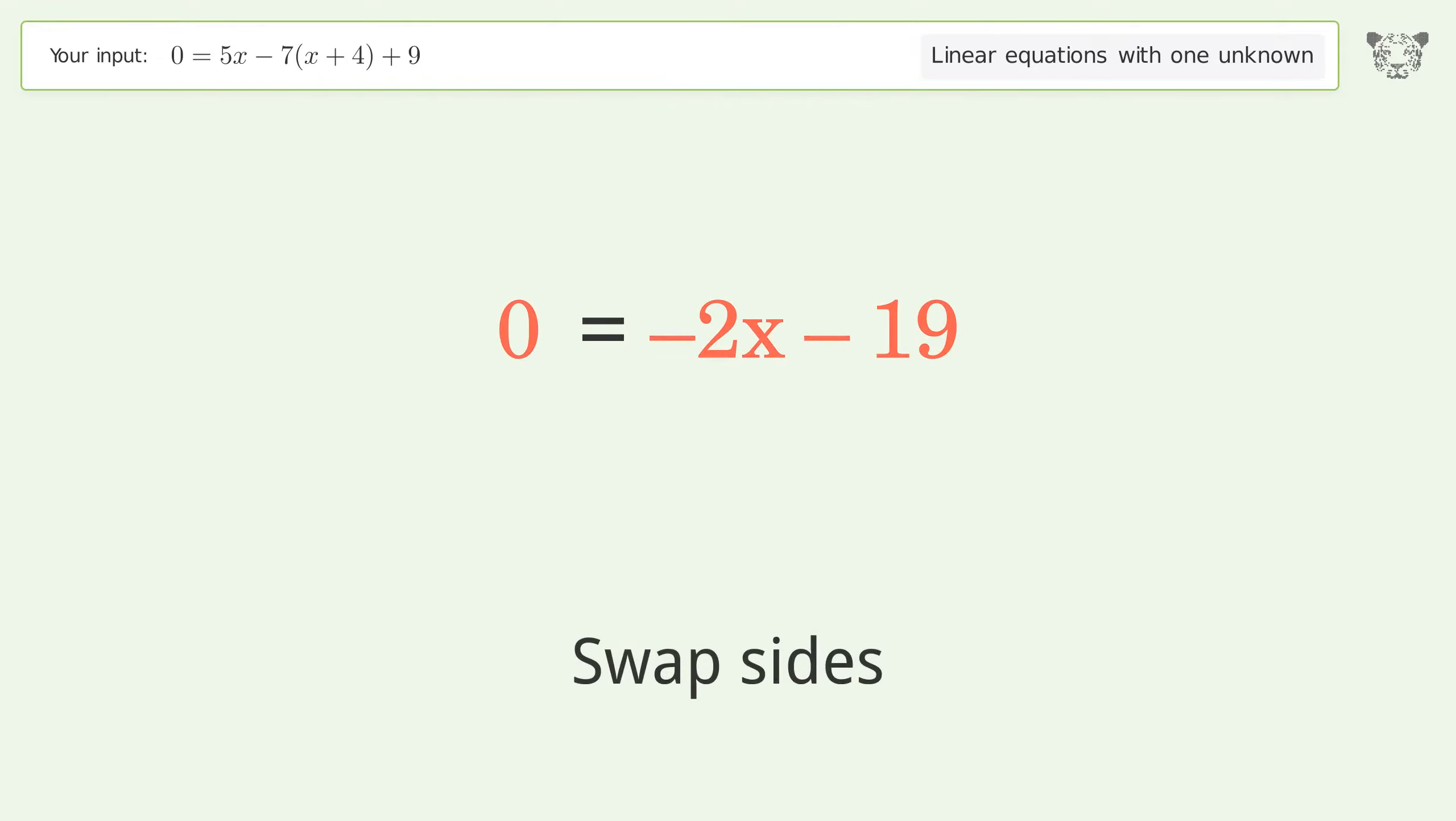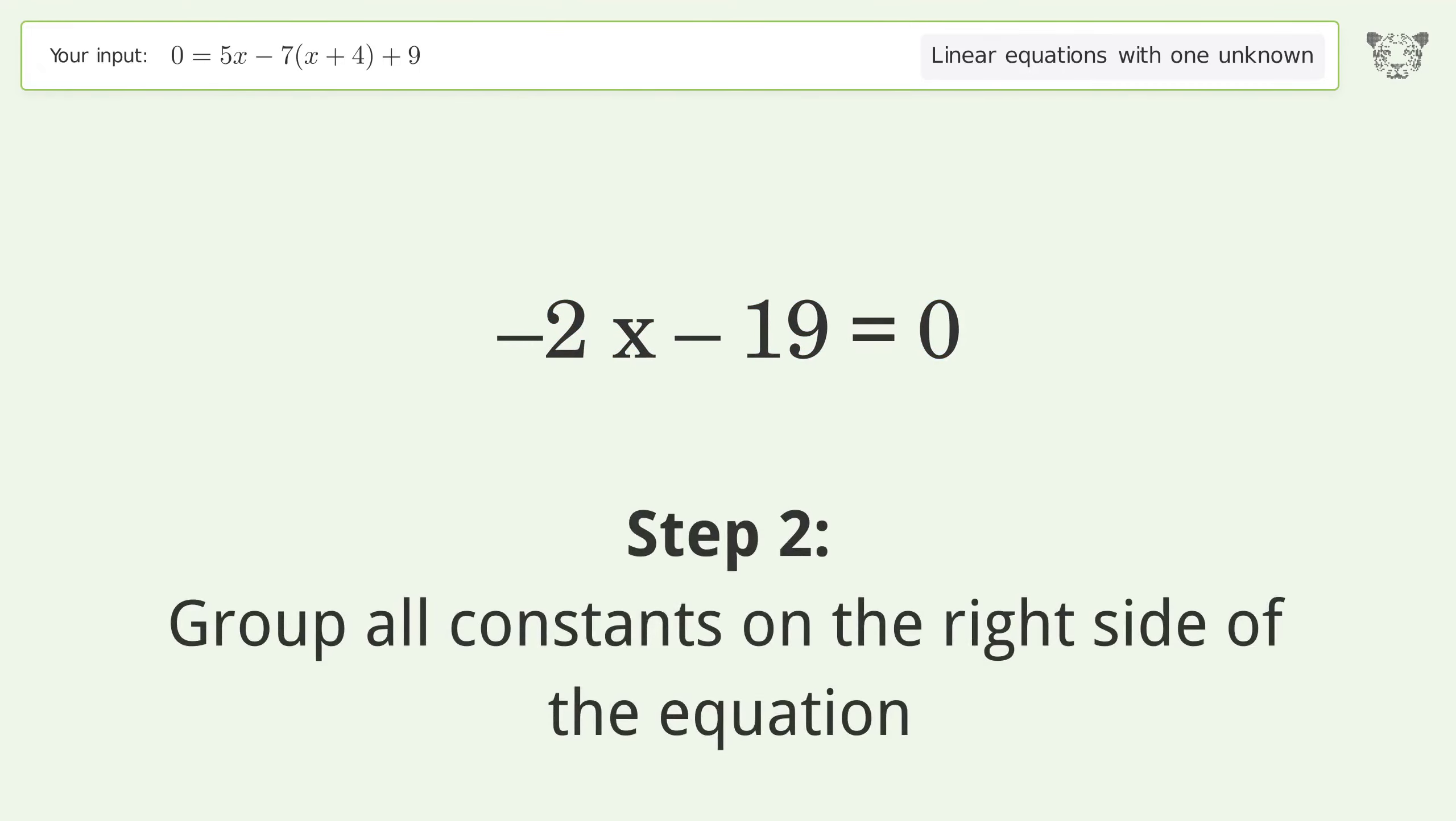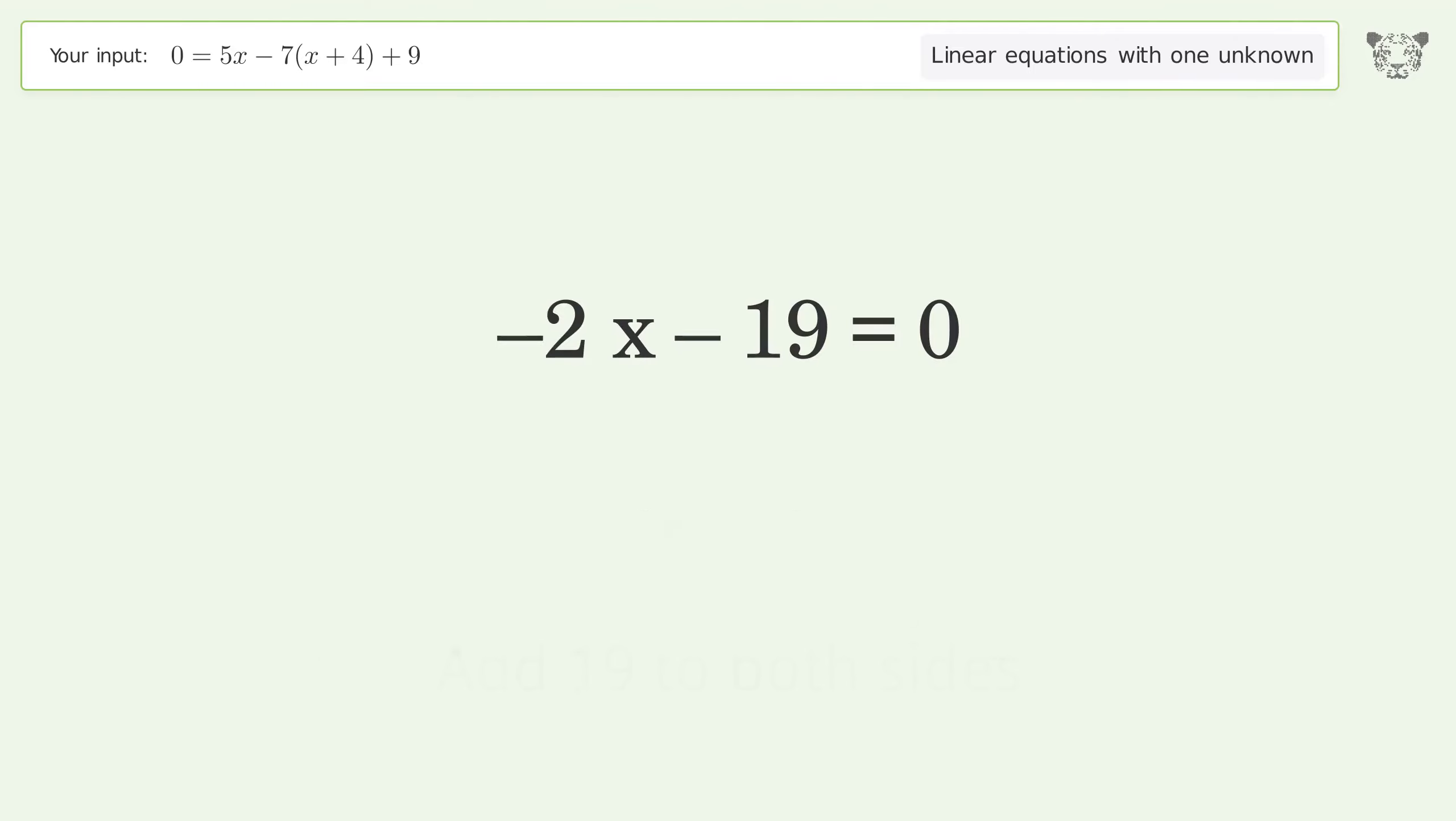Swap sides. Group all constants on the right side of the equation. Add 19 to both sides. Simplify the arithmetic.